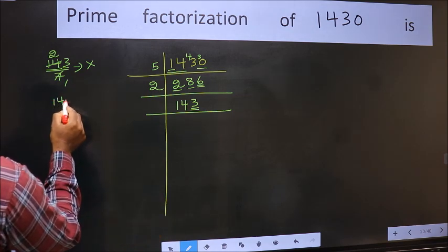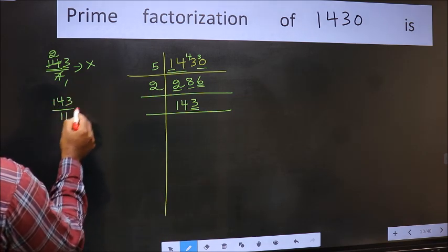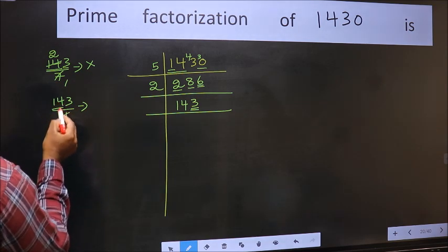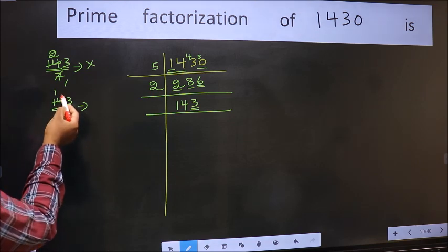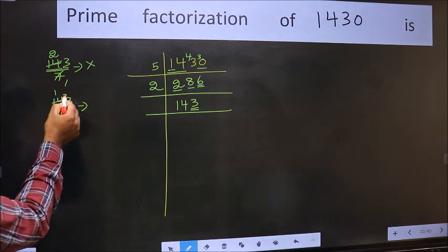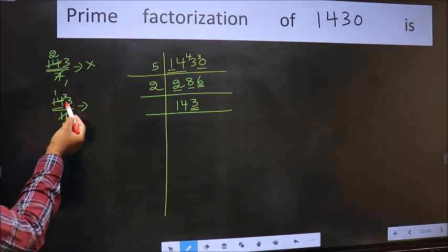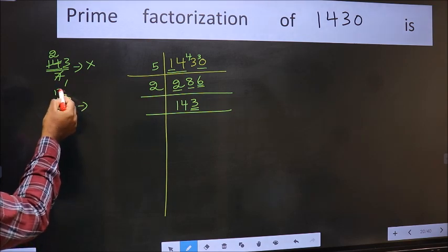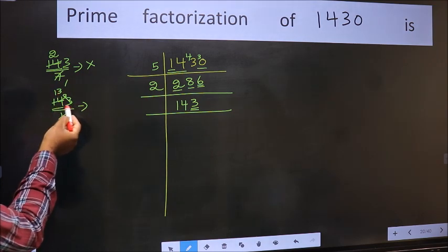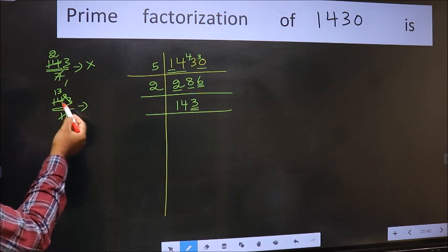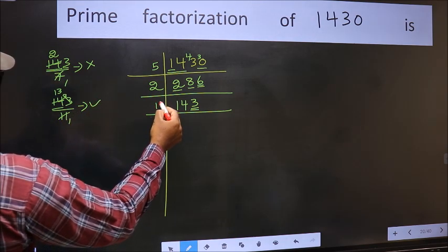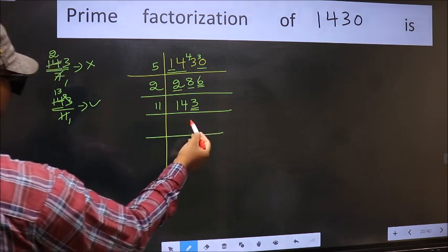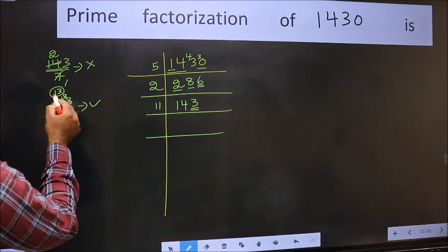Our number close to 14 in 11 table is 11×1=11. 14-11=3, 3 carried forward: 33. When do we get 33 in 11 table? 11×3=33. No number has been left out, so this is divisible by 11. So we take 11 here and here we write this number 13.